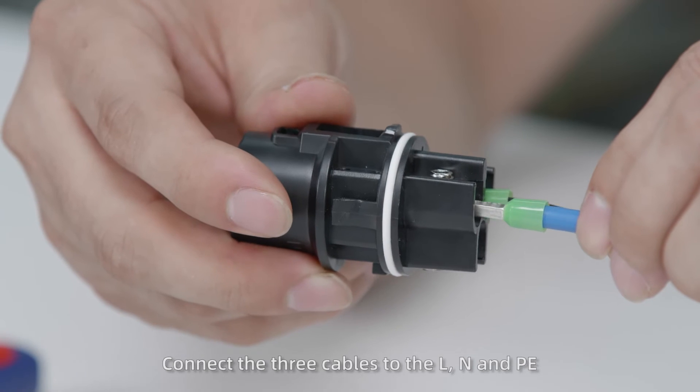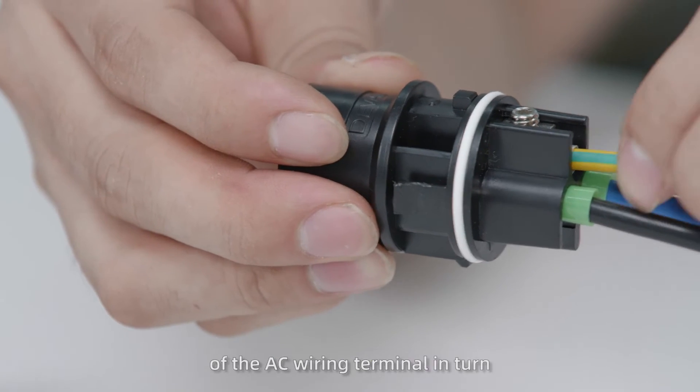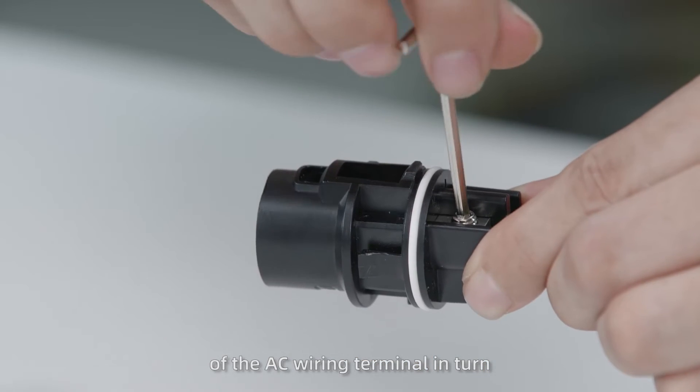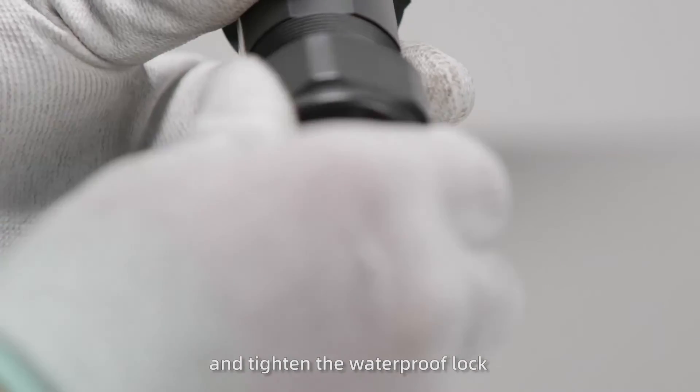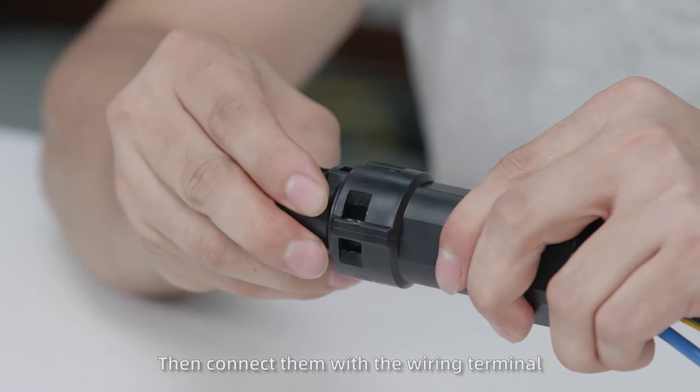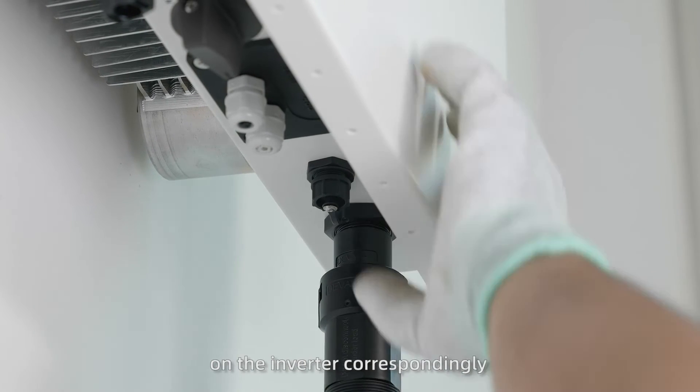Connect the three cables to the L, N, and E of the AC wiring terminal in turn. Fasten them with a screwdriver and tighten the waterproof lock. Then connect them with the wiring terminal on the inverter correspondingly.